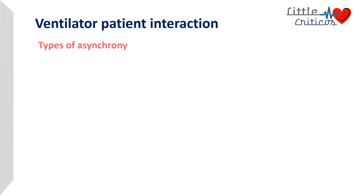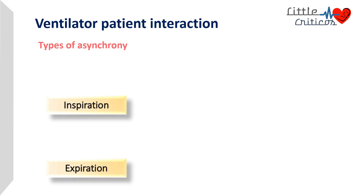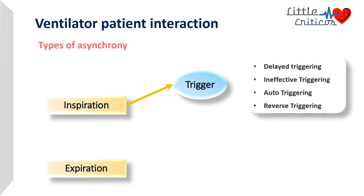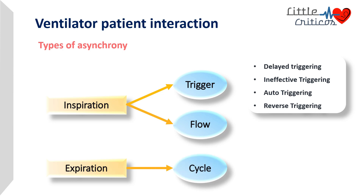Asynchrony can be classified based on the phase in which it occurs. During the phase of inspiration, it can be trigger asynchrony or flow asynchrony. Trigger asynchrony can be delayed triggering, ineffective triggering, auto-triggering, or reverse triggering. During the phase of expiration, there can be cycle asynchrony.